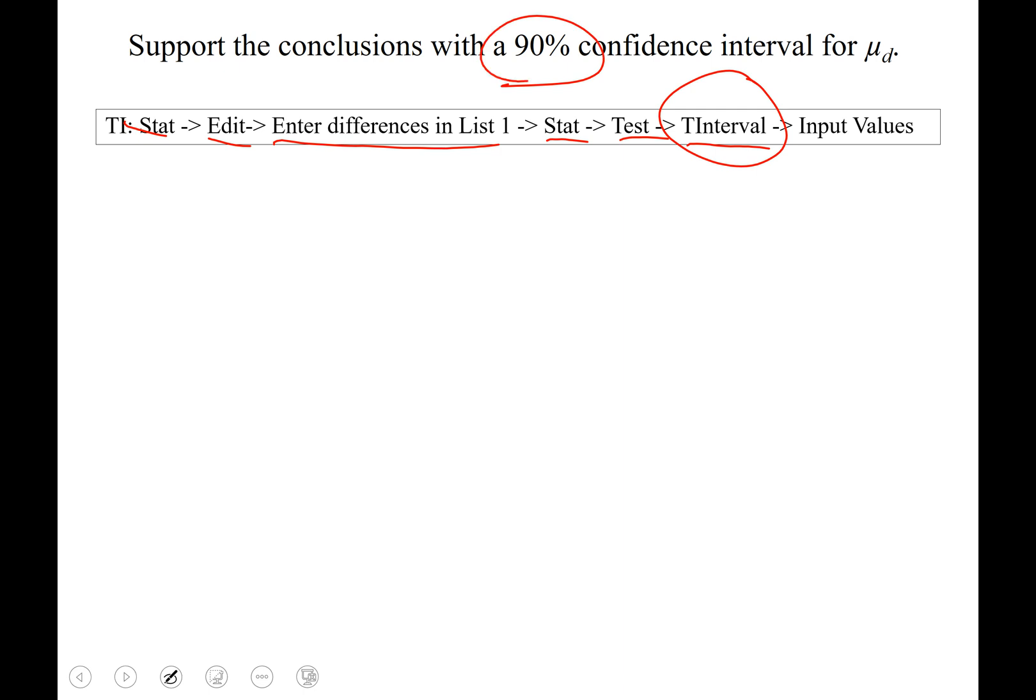And the problem here, 90% is our sea level. And calculating that. The output screen gives us a lower confidence limit of negative 7.658 and an upper confidence limit of 14.058.